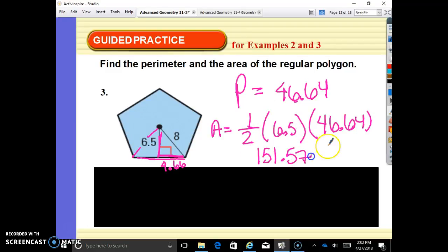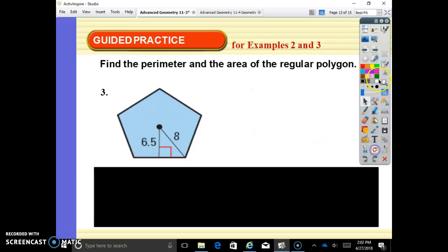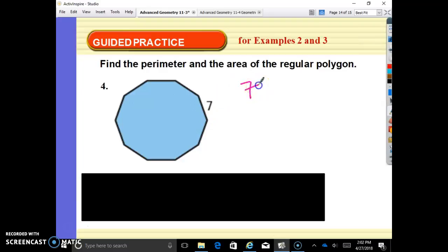All right, so on this one our perimeter: it is 10 sides and there's 7 each, so 10 times 7 is 70. Your perimeter is 70. For your area, your area is one half your apothem times your perimeter of 70.